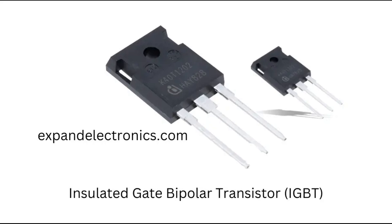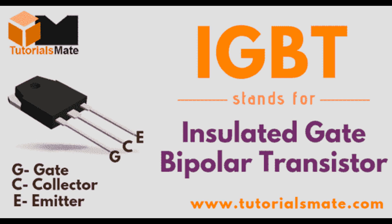Renewable energy systems — solar inverters: In photovoltaic (PV) systems, IGBTs are used in solar inverters to convert DC generated by solar panels into AC for use in homes or for feeding into the power grid. Wind turbine power converters — IGBTs control the conversion of variable AC generated by wind turbines into stable DC and then back into grid-compatible AC power, ensuring smooth integration into the grid. Uninterruptible power supplies (UPS) — IGBTs manage the power conversion and switching between utility power and backup battery systems, ensuring continuous power supply during outages, making them ideal for data centers, hospitals, and critical infrastructure.